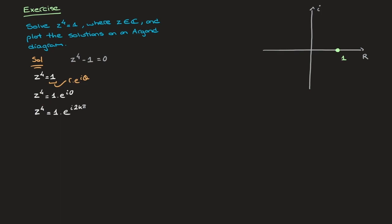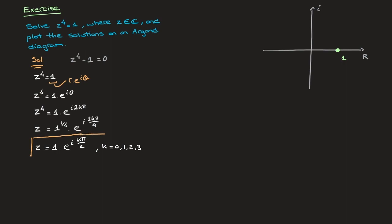Now I want to get rid of the power of 4 on z. To do that, I raise both sides to the power of 1 over 4. Using De Moivre's theorem, that leads to z equals 1 raised to the power of 1/4 times e to the i·2kπ over 4. Using the fact that 1 raised to the power of 1/4 is just 1, and simplifying the fraction, I can write z equals 1 times e to the i·kπ over 2. This is the general solution, which I'll box: z sub k equals e to the i·kπ over 2.